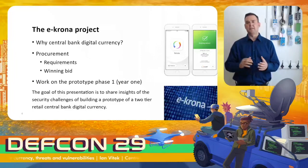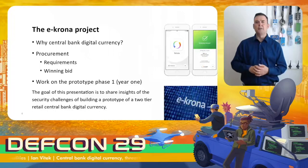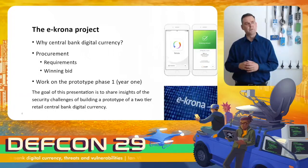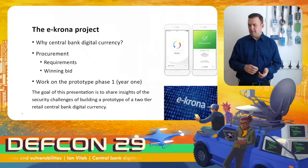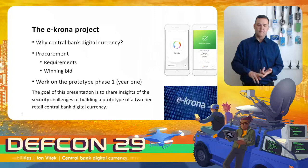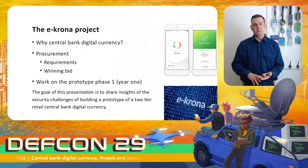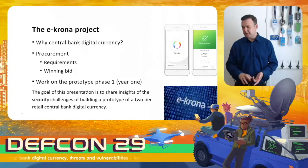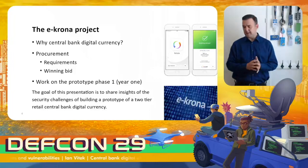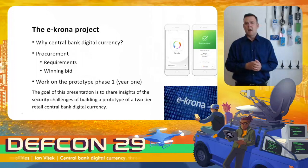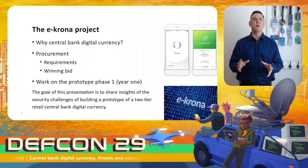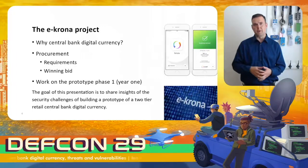The central bank of Sweden thinks there should be a digital alternative to physical cash. The e-krona project started at the Riksbank, and we wanted to run a pilot to see how a central bank currency should work. We started with procurement — we had security requirements, functional requirements like user stories, and non-functional requirements. A winning company was selected and has developed a prototype. This presentation is focused on the phase one prototype.